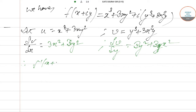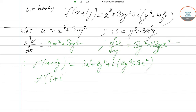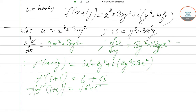Therefore we can write that f'(x + iy) = (3x² + 3y²) + i(3y² + 3x²). So f'(1 + i): substituting x=1 and y=1 gives 6 + 6i. Taking the modulus of f'(1+i), we get √(6² + 6²) = √(36 + 36) = √72 = 6√2.